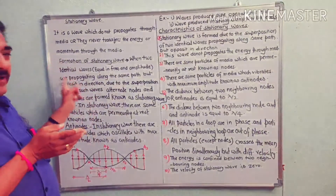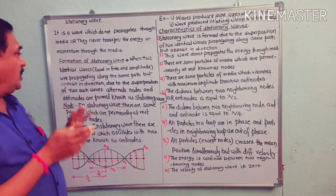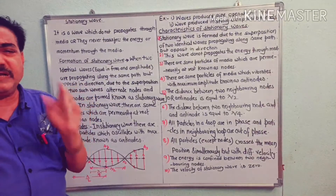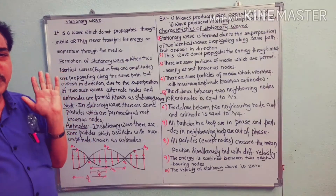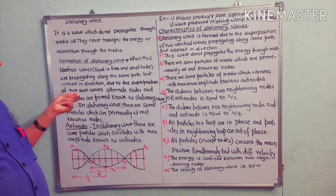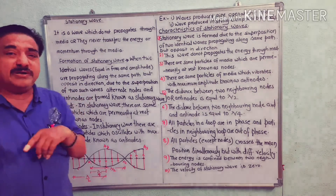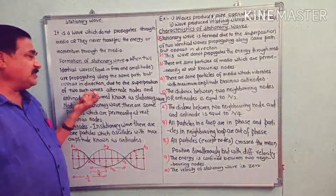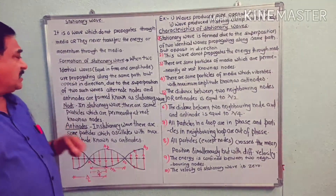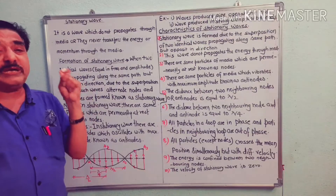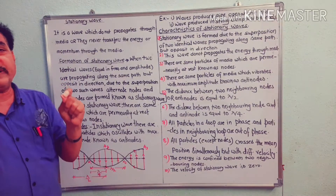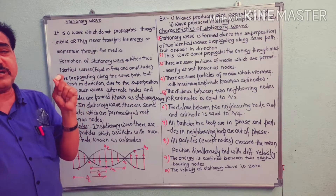When two identical waves equal in frequency and amplitude are propagating along the same path but opposite in direction, due to the superposition of these two waves, alternate nodes and antinodes are formed. Such a wave is called a stationary wave.